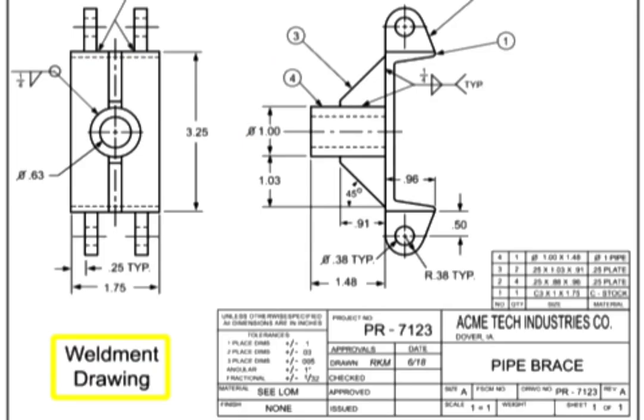Weldment drawings are a unique form of detail drawings. Weldments occur when multiple pieces are welded together to form a final item. Weldments are not assemblies, due to the fact that their component parts are not stocked or sold separately, have no use as stand-alone items, and are not detailed on separate drawings. Weldment drawings can also be called inseparable assembly drawings. Welding symbols that indicate the length, type, and other information about the weld are shown in the field of the drawing to indicate the location of the welds.